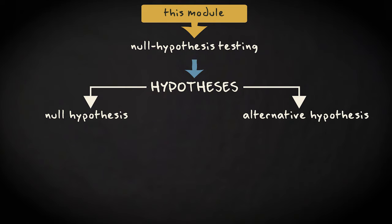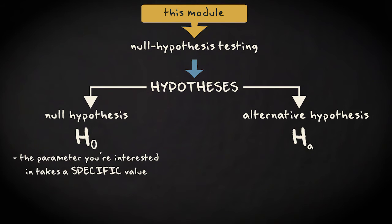The null hypothesis is symbolized by H0 and the alternative hypothesis by HA. The null hypothesis claims that the parameter you're interested in takes a specific value. It usually represents the situation where there is no relation between variables or no difference between groups.